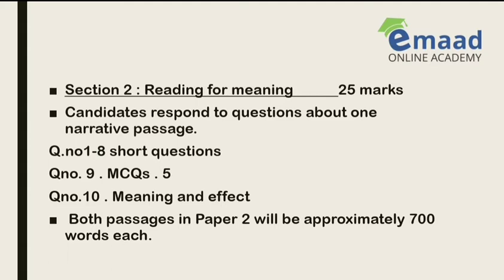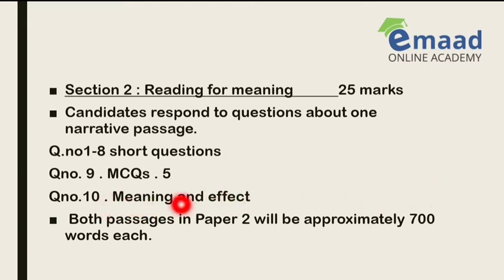This meaning and effect question requires sharp reading, understanding, and comprehension skills. You have to read the passage thoroughly and extract what type of effect a particular line or statement creates. Both passages in Paper 2 will be approximately 700 words each, so there will be two passages in the reading paper.